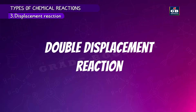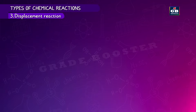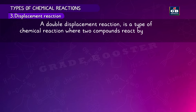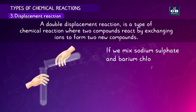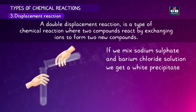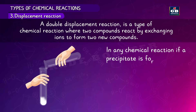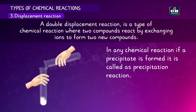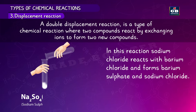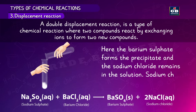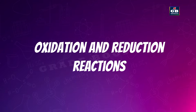A double displacement reaction is where two compounds react by exchanging ions to form two new compounds. When sodium sulfate and barium chloride solutions are mixed, a white precipitate forms — this is called a precipitation reaction. Barium sulfate forms the precipitate while sodium chloride remains in solution.